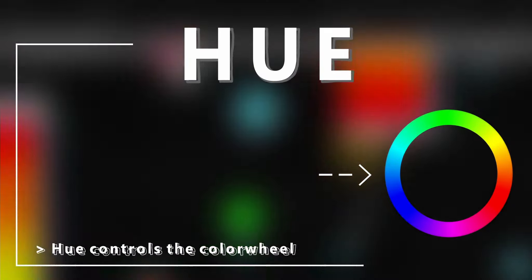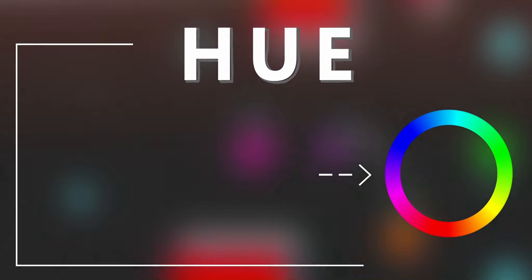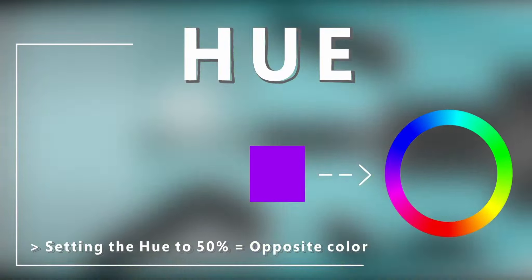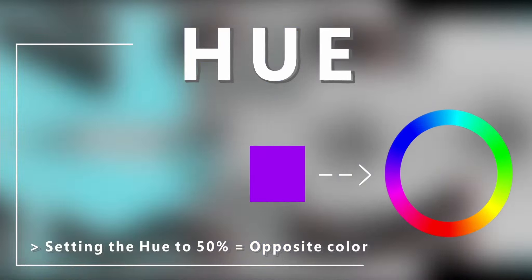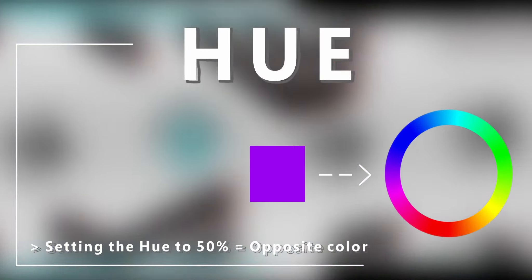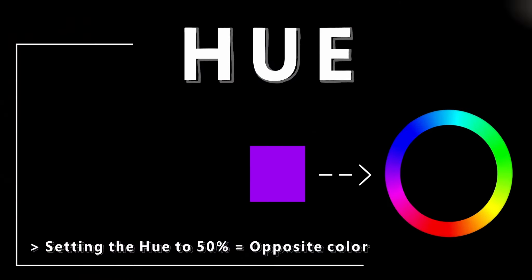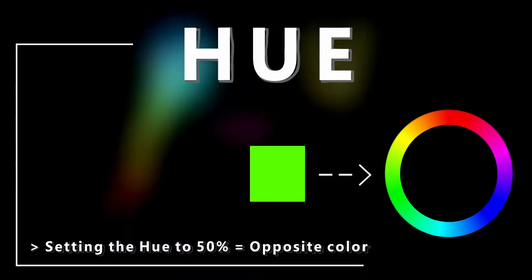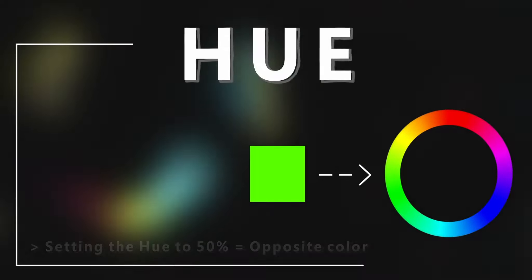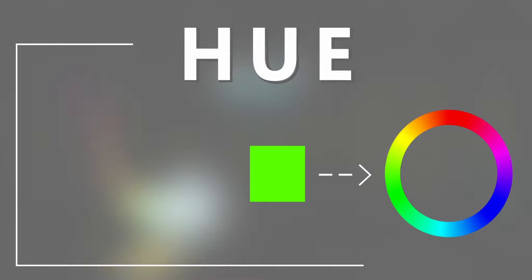To demonstrate, I'll pick my favorite color, purple. If I change the hue property, it's like spinning the wheel. For example, if I set the hue to 50%, the wheel will turn 180 degrees. With these properties, you can make any color that you want in the editor. And speaking of the color wheel, let's dive deeper and analyze it in more depth.